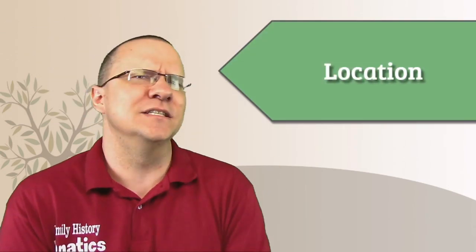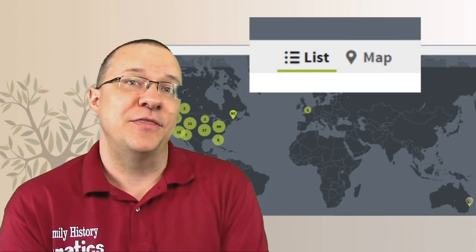Our next category is the location. And by location, I mean, where do your matches live? Now, this may be important, particularly for people who have immigrant ancestors that might have had their other relatives move to other parts of the world. Ancestry, at the top, you can list your relatives with a list, or you can go over to the map function.